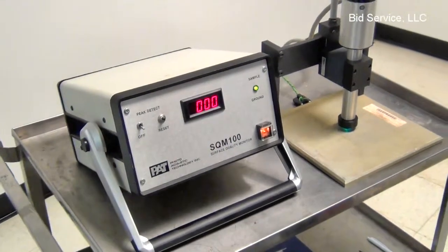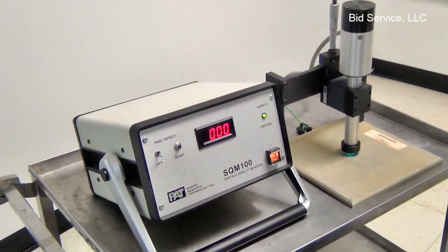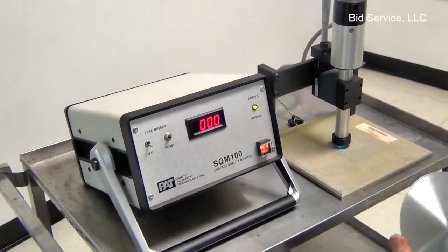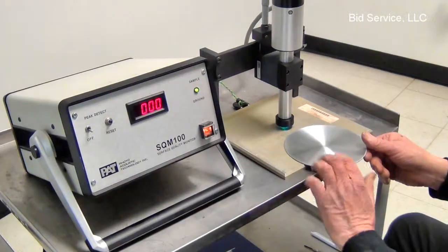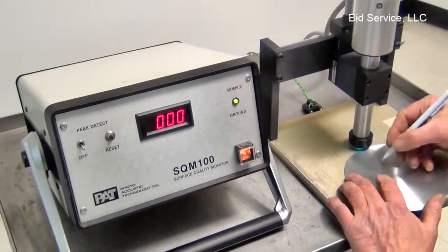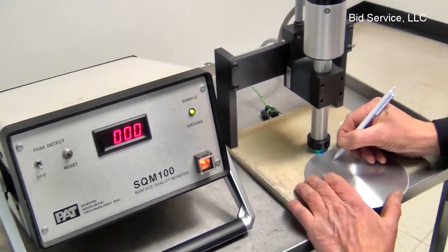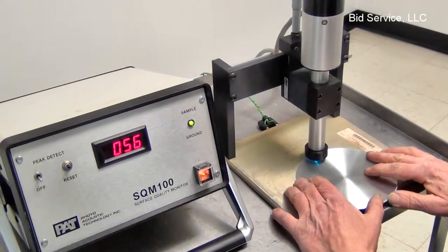Another example of how sensitive this instrument is - here is a piece of machined aluminum. What I'll do is put this piece on here, make a mark, and we'll look at this spot, let's say right here.